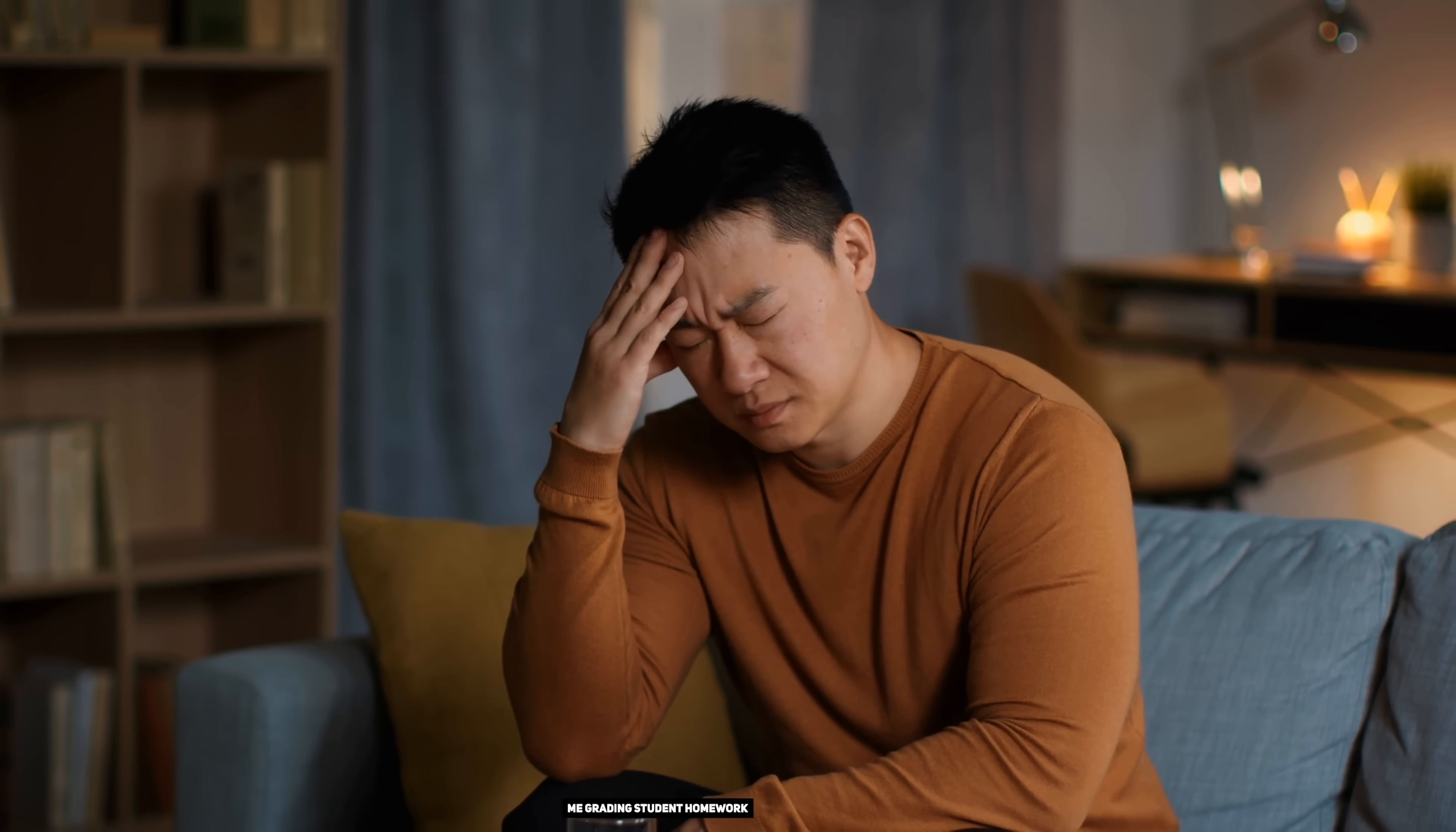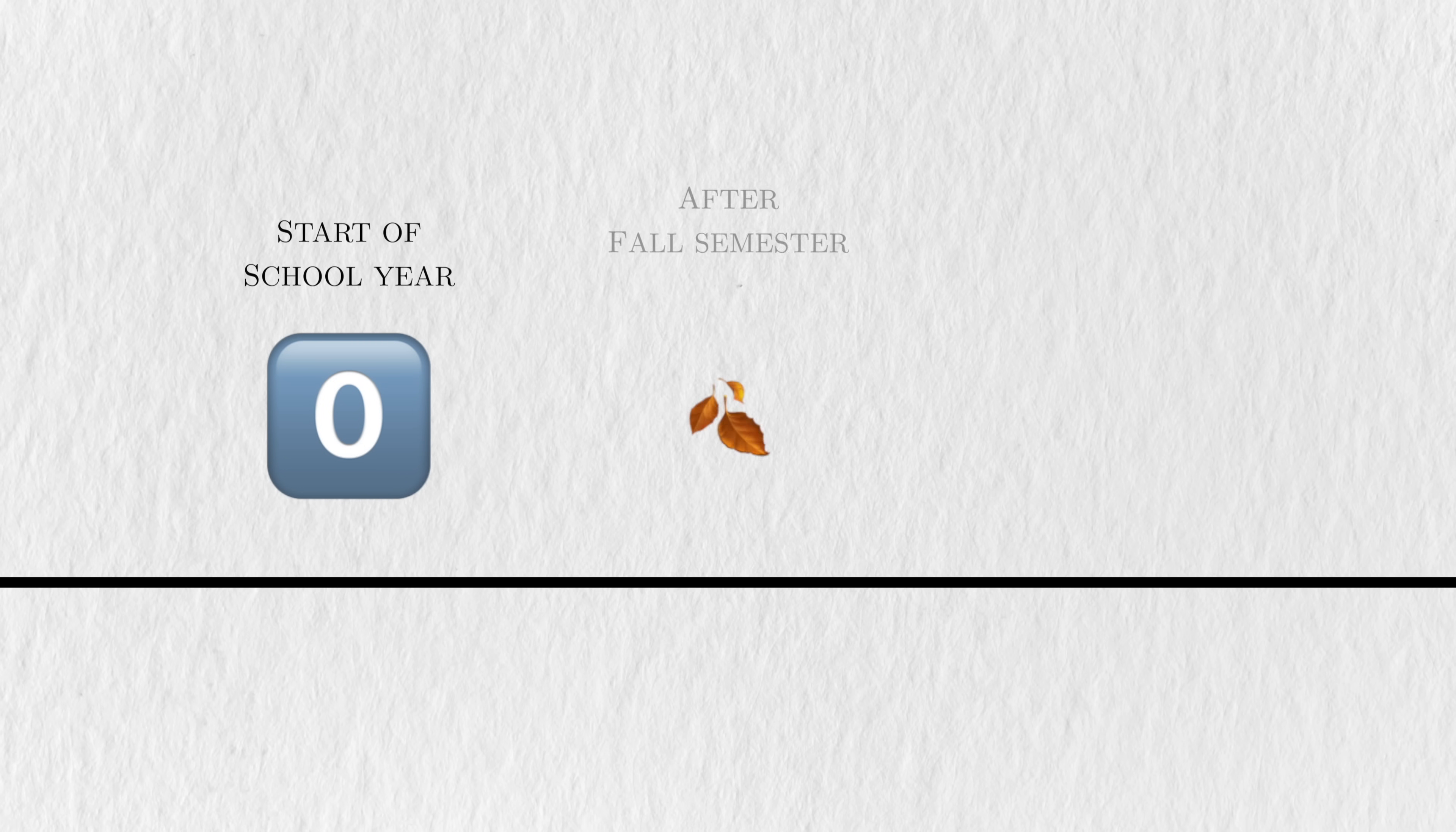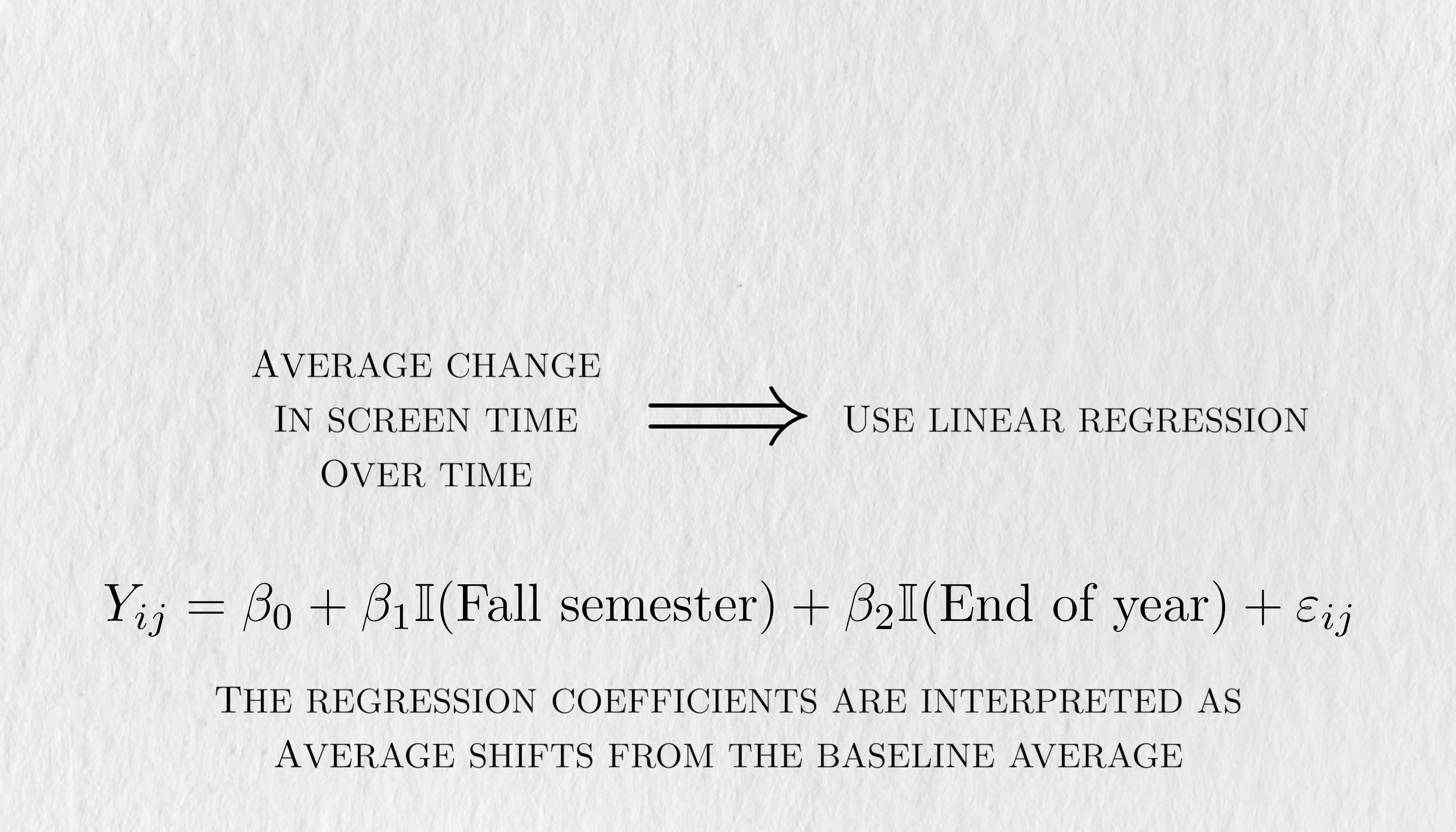Per very normal style, we'll motivate our model with an underlying research problem. Let's say that we're interested in studying graduate students, and quantifying how their average phone usage changes through the course of a single school year. We'll measure their screen time at the start of the school year, after fall semester, and at the end of the academic year. Since we're interested in the average behavior over time, a naive approach we could use is linear regression, using the different time points as categorical regressors. With linear regression, these coefficients are interpreted as average shifts from the average baseline time. If we estimate these coefficients, we can use them to answer our research question and characterize how the average screen time changes over time.